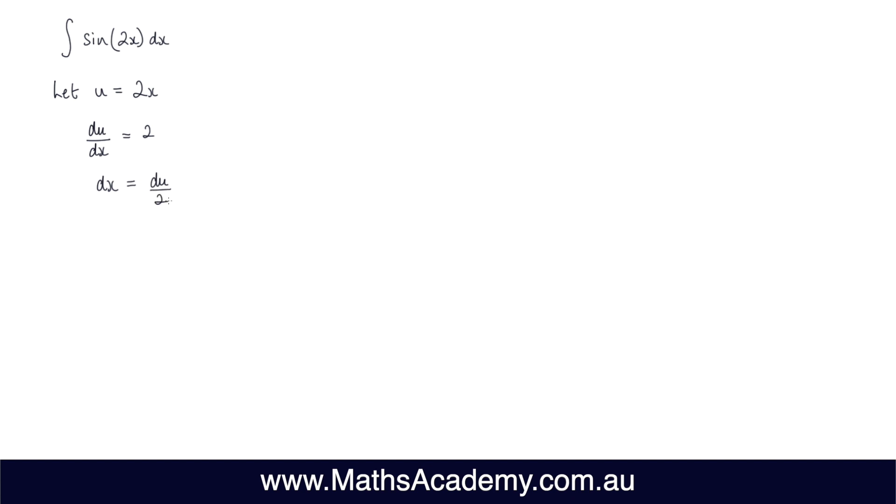And now what we can do is substitute these back into the original integral. So the integral of sine of 2x with respect to x is equal to the integral of sine. Now, instead of 2x, we know that 2x is now equal to u. So we get the sine of u.